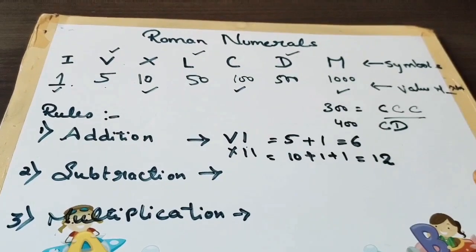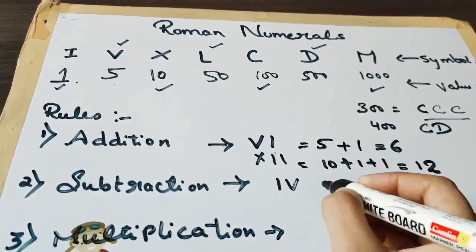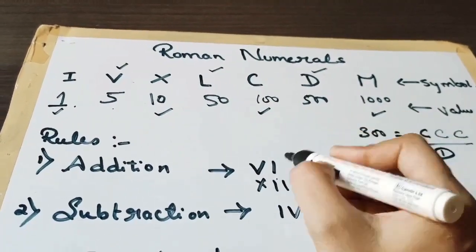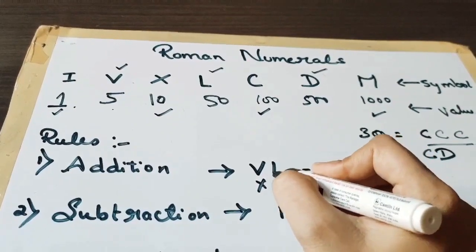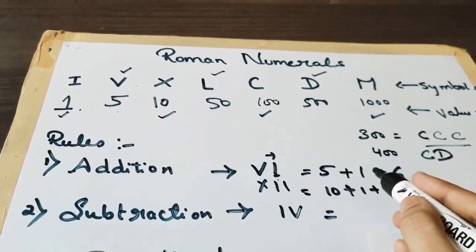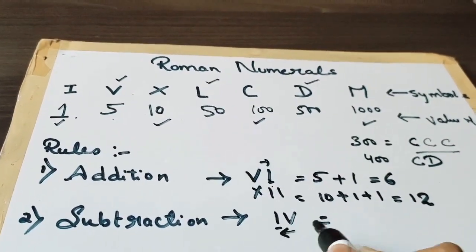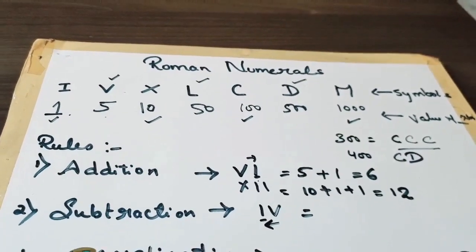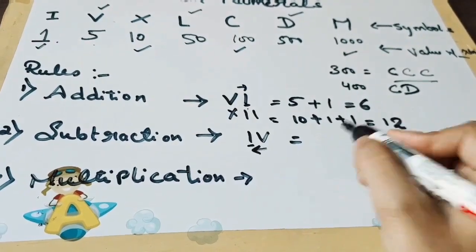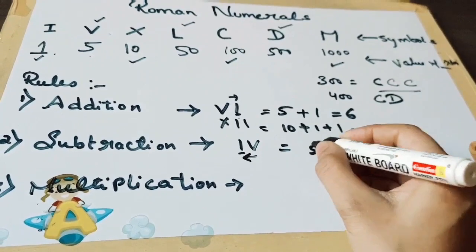Now coming to the rule subtraction. In subtraction, when the smaller value symbol is at the right place, then we add. And when the smaller number is at the left place of a number, then we need to subtract. So this is V, first we have to write V, that is 5.